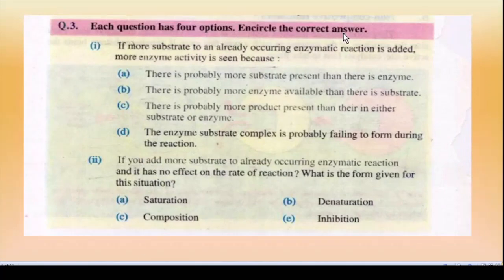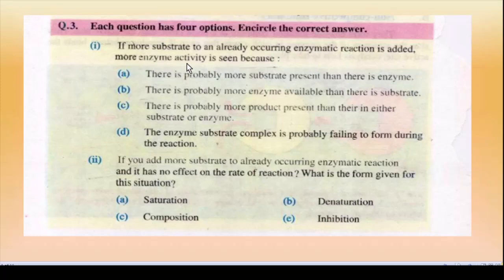Question number 3: MCQs. MCQ 1 — If more substrate is added to an already occurring enzymatic reaction, more enzyme activity is seen. Agar hamare paas ek pehle se maujood enzymatic reaction mein aur substrate add kiya toh enzyme activity kyun badhti hai? Correct option B: there is probably more enzyme available than there is substrate. Reaction ki speed isliye badhi hai kyunke bahut se enzymes abhi free hain jo substrate ke saath attach ho sakte hain.